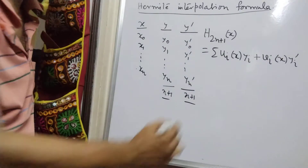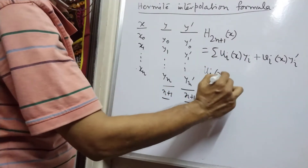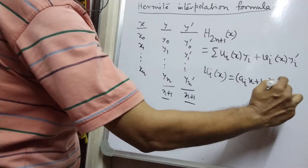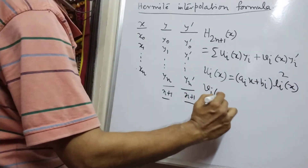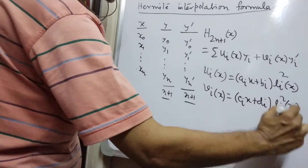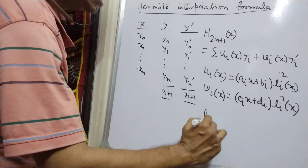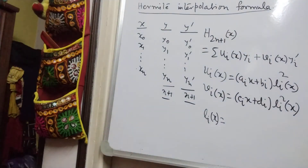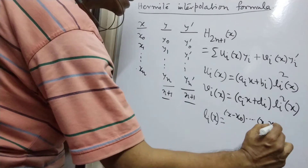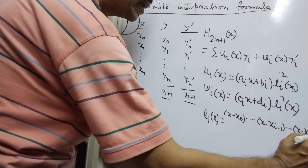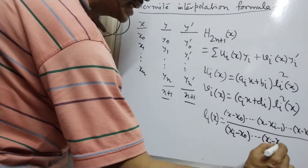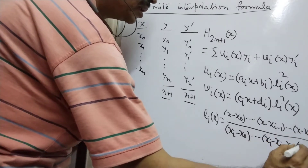We write it as a linear combination where u_i(x) and v_i(x) are polynomials of degree 2n plus 1. We choose u_i(x) as (a_i·x + v_i)·l_i²(x) and v_i(x) as (c_i·x + d_i)·l_i²(x), where l_i(x) is the Lagrange interpolation function defined as the product (x - x_0)···(x - x_{i-1})(x - x_{i+1})···(x - x_n) divided by (x_i - x_0)···(x_i - x_{i-1})(x_i - x_{i+1})···(x_i - x_n).